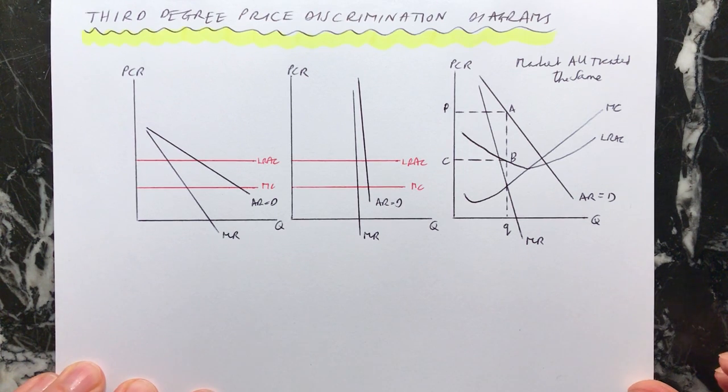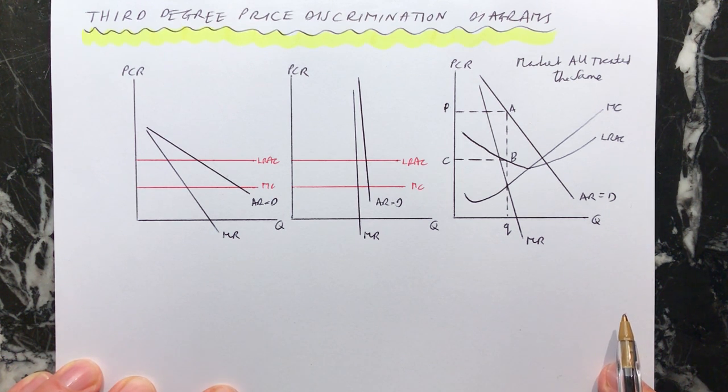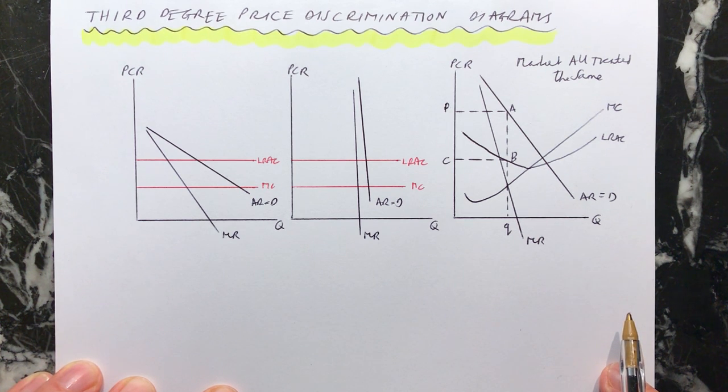Hi everybody, in this video I'm now going to explain the diagrams that you can draw to show third degree price discrimination. In a separate video I've explained what third degree price discrimination is and the conditions that have to be satisfied in order for it to take place, and also why a firm might want to use this. So let's look now at how we can show in diagrams the benefit to a business of using third degree price discrimination.